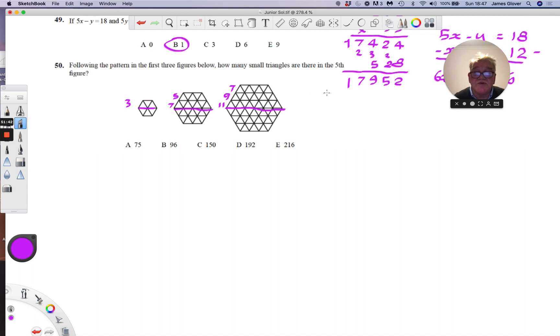So in the fourth shape, the odd numbers of triangles in each row would be 9, 11, 13 and 15. And so in the fifth shape we would have 11, 13, 15, 17, 19.